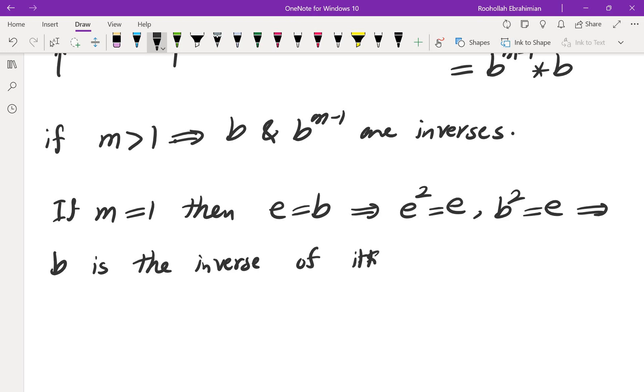So let's see what we showed so far. What we showed so far was we knew star was associative. We showed that it has an identity. We showed that every element has an inverse. Therefore, it would be a group. And that brings me to the end of this solution.